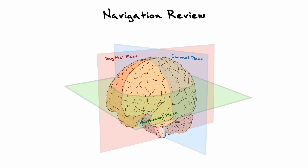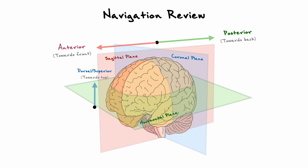All these planes produce their respective cross sections, but to navigate within them there is additional terminology. In the forward and backwards axis, the direction towards your face is anterior and the direction towards the back of your head is posterior. In the up-down axis, the direction towards the top of the head is called either dorsal or superior — with respect to the brain these two words are pretty much interchangeable. For the bottom direction, the words are ventral and inferior. For the axis going towards the sides of your head, the middle point is the midline, and as you go away from it you go towards the lateral directions.